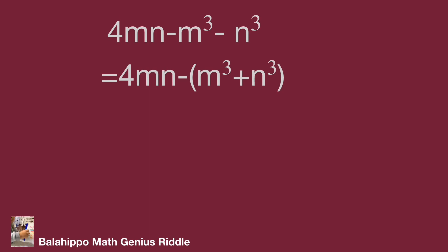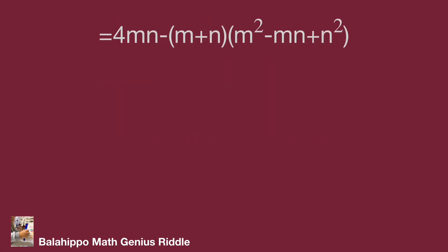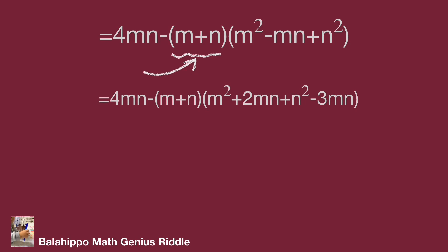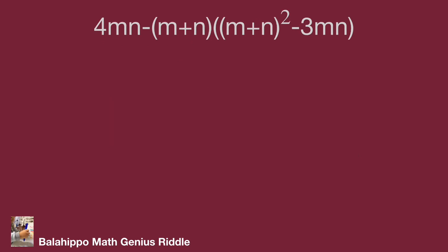m cubed plus n cubed equals quantity (m plus n) multiplied by quantity (m squared minus mn plus n squared). Next, I'm going to generate an (m plus n) factor in the expression. Taking the quantity m squared minus mn plus n squared, and adding 2mn between m squared and n squared, the second quantity becomes m squared plus 2mn plus n squared minus 3mn. Since m squared plus 2mn plus n squared equals (m plus n) squared, the expression becomes 4mn minus (m plus n) multiplied by ((m plus n) squared minus 3mn).